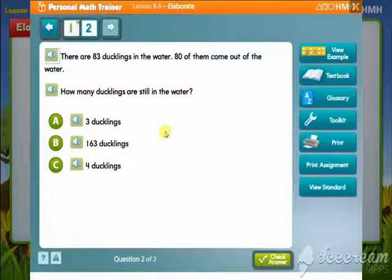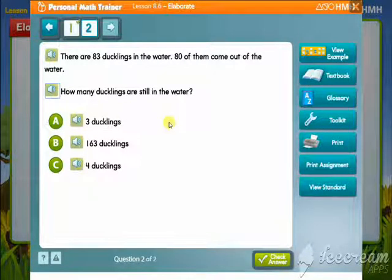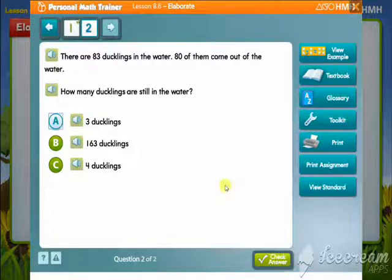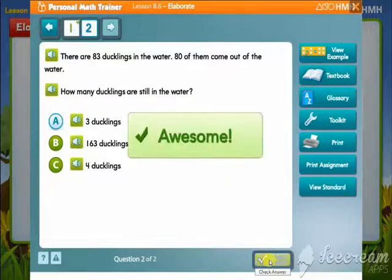There are 83 ducklings in the water. 80 of them come out of the water. How many ducklings are still in the water? 3 ducklings. Awesome!